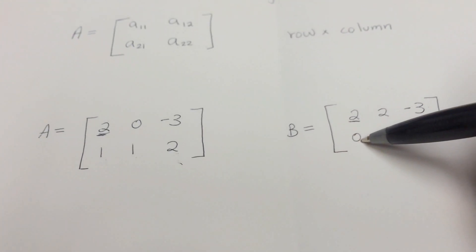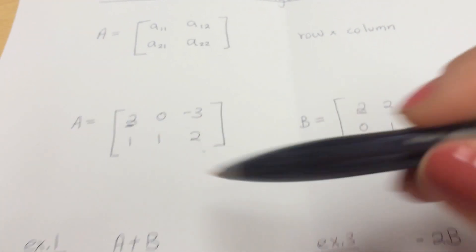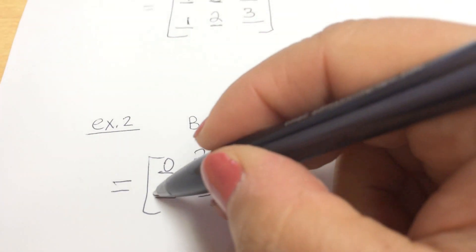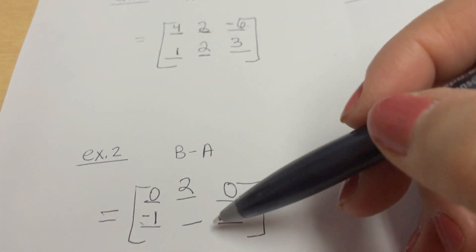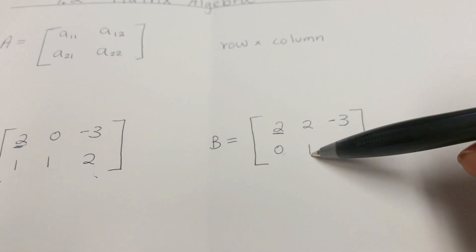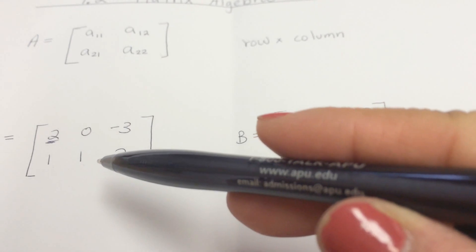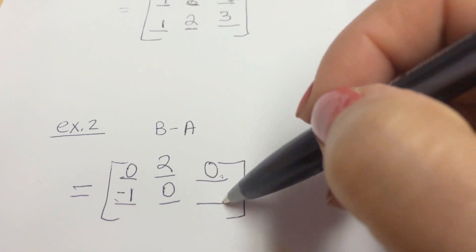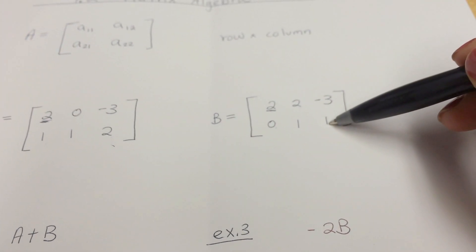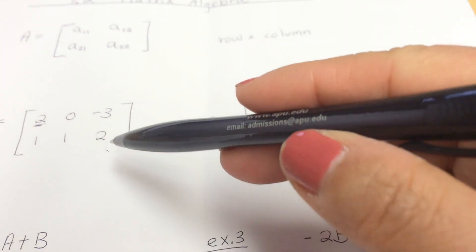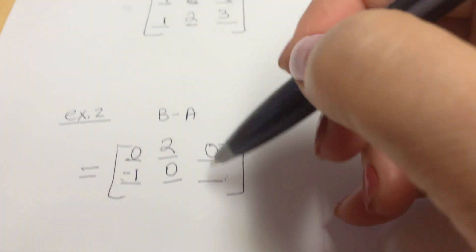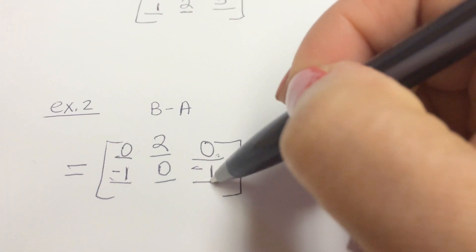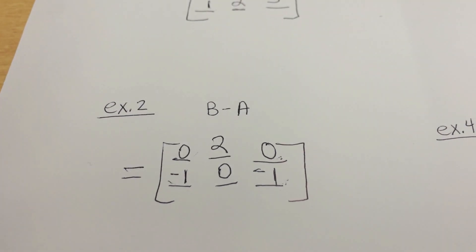Second row, first column: zero minus one gives negative one. Second row, second column: one minus one gives zero. Second row, third column: one minus two gives negative one. That's the final answer for example two.